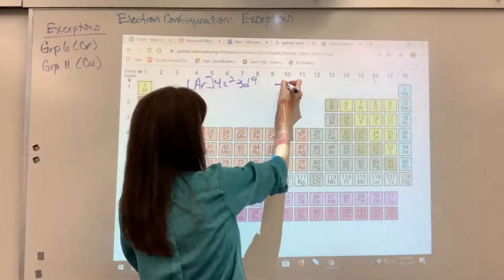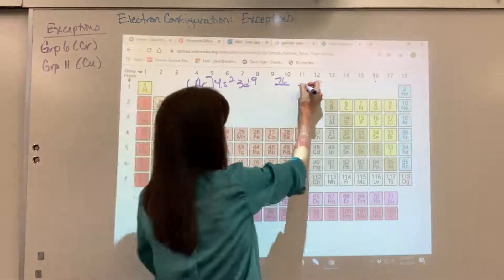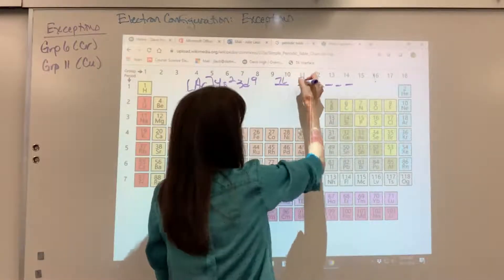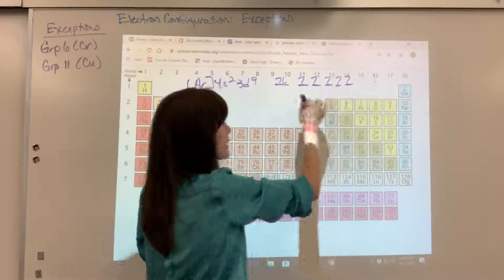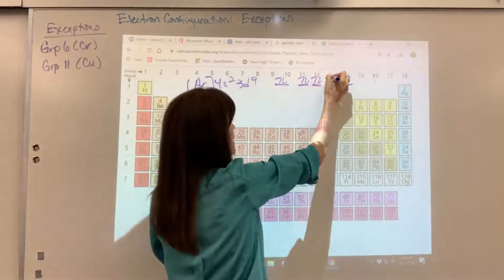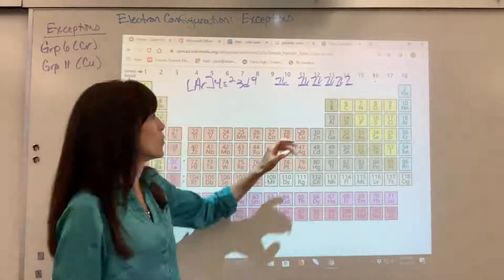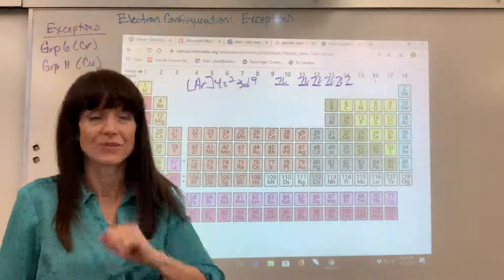Our orbital notation would be two electrons in the 4S, 1, 2, 3, 4, 5. And then notice Hund's rule. I'm filling one electron in each orbital, and then I go back and double up. So we have one unpaired electron right there.